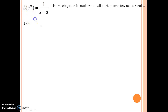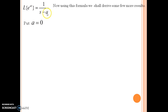The first formula I am deriving: put a equal to 0 in this formula. You will obtain Laplace of e to the power 0, that is nothing but 1. So Laplace of 1 equals 1 upon s minus a, and finally what you obtain is Laplace of 1 equals 1 upon s.